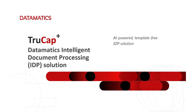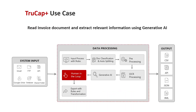Simultaneously, through seamless integration with generative AI, TruCat Plus extracts relevant information from the invoiced document for records. TruCat Plus ingests the document images from different sources such as email, FTP, Google Drive, etc., with its inbuilt OCR functionality.